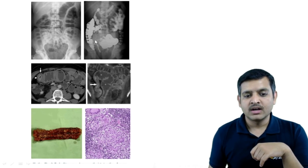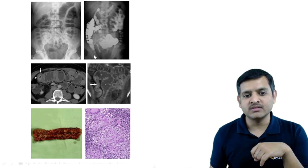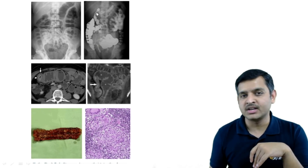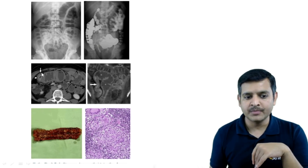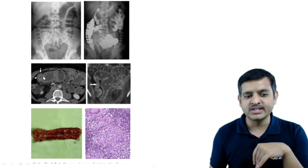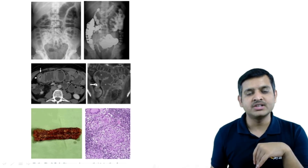What you can see is an irregular narrowing in the region of the terminal ileum as well as in the region of the duodenum. On CT, you see differential enhancement in the region of the terminal ileum.